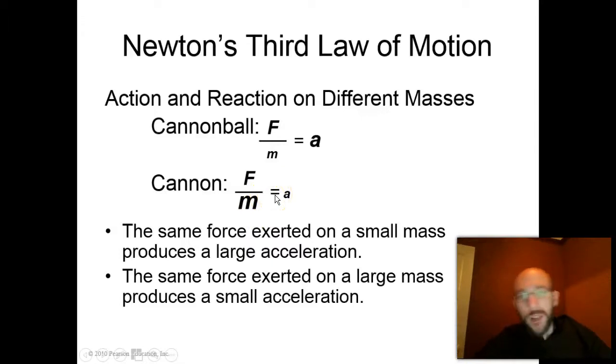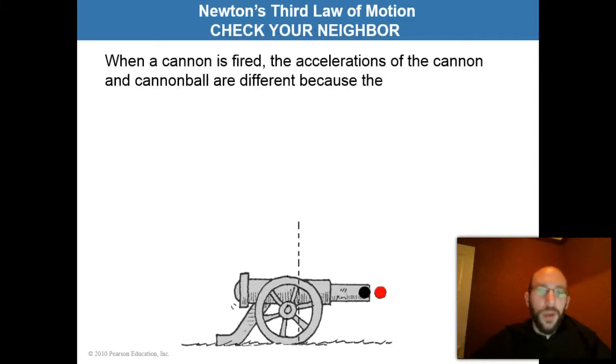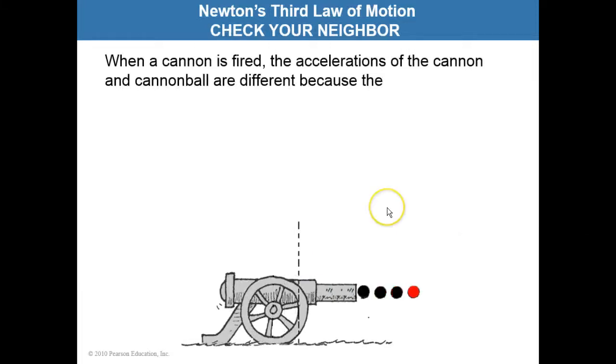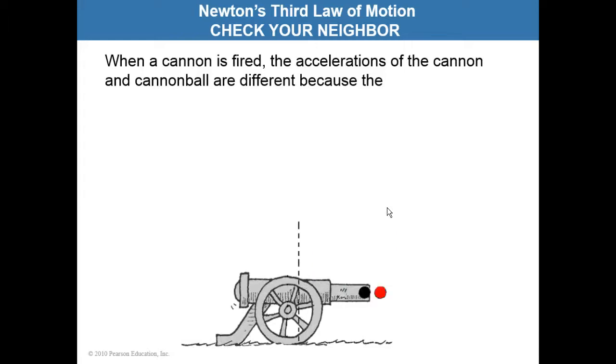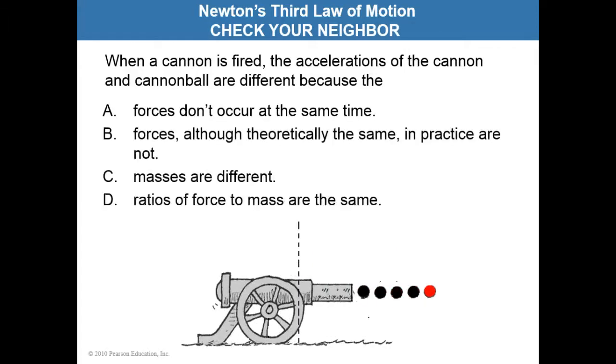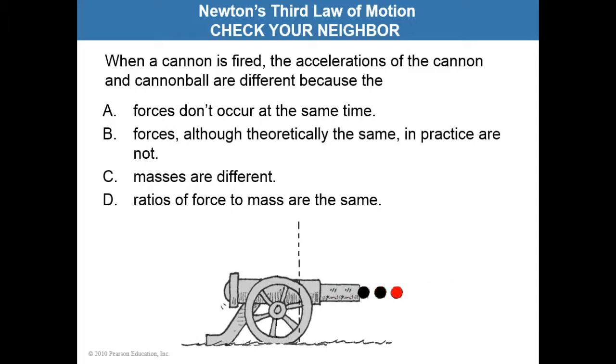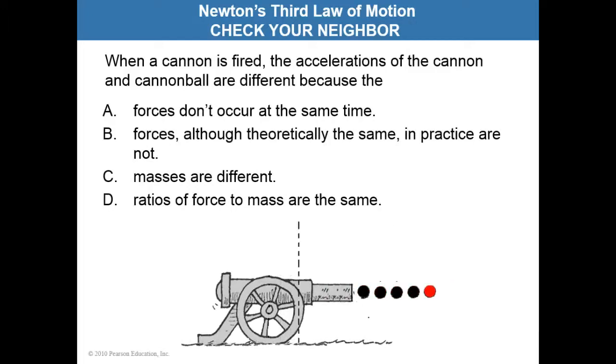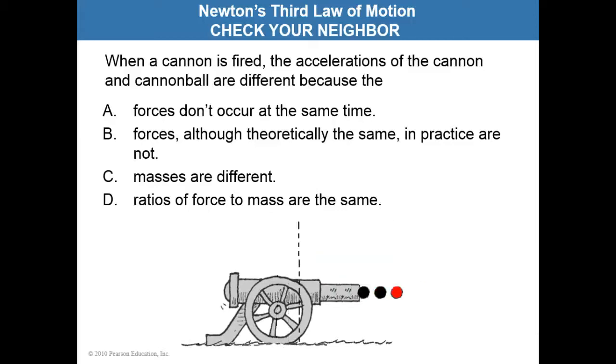I think you're ready now for a couple of check questions. When a cannon is fired, the accelerations of the cannon and cannonball are different because: A. the forces don't occur at the same time, B. the forces, although theoretically the same, in practice are not, C. the masses are different, or D. the ratios of force to mass are the same. Pause the video now to find your answer.